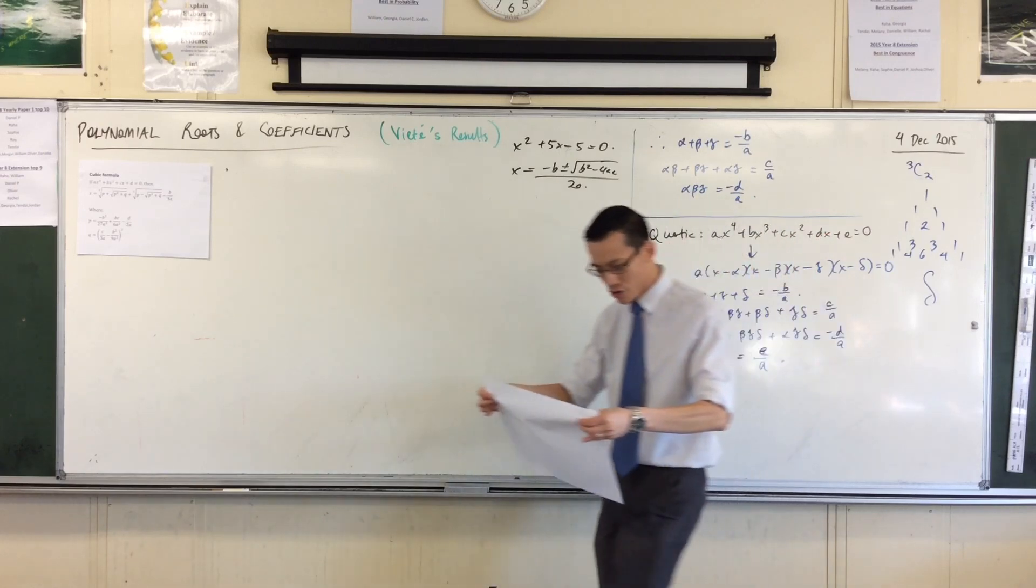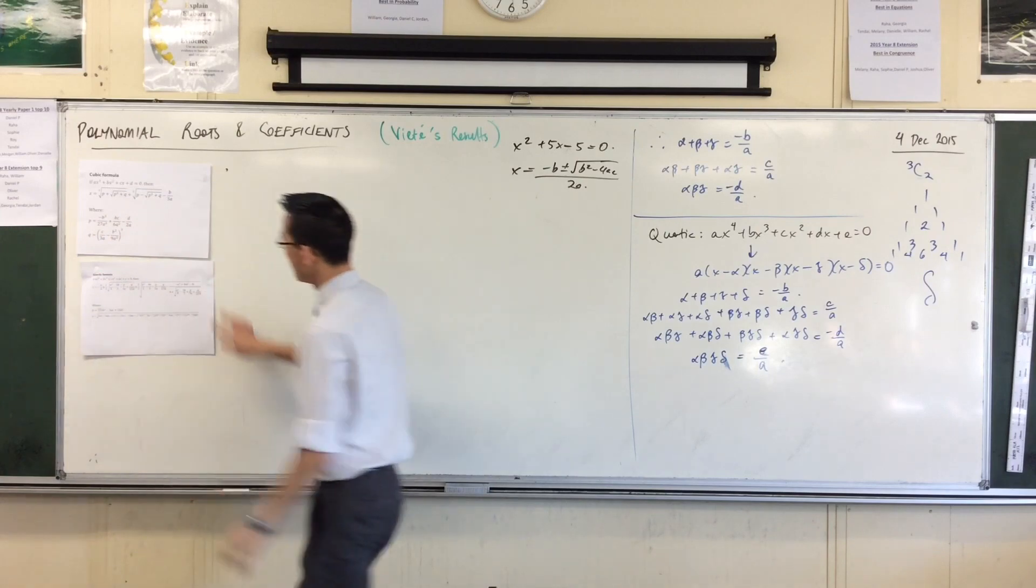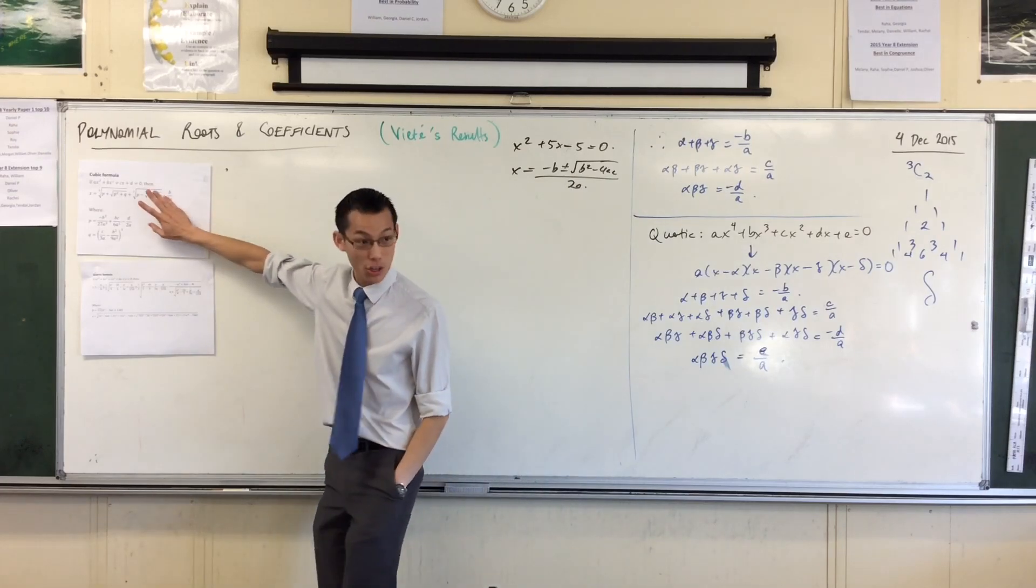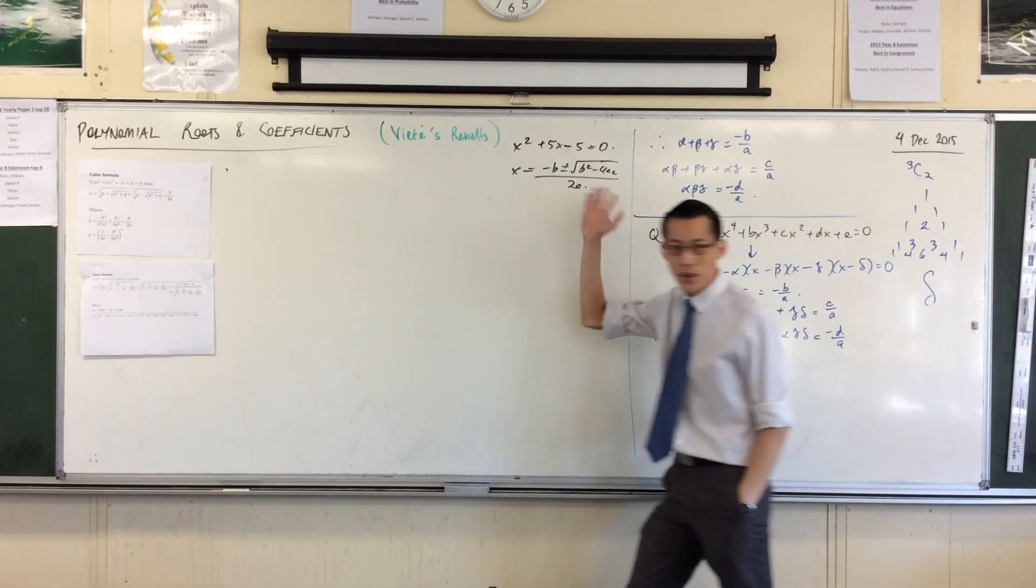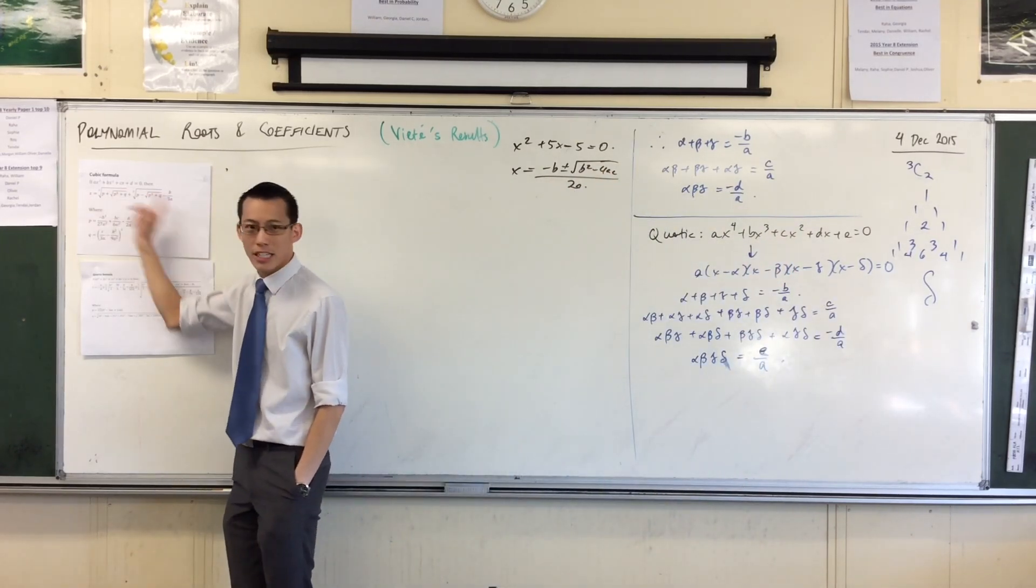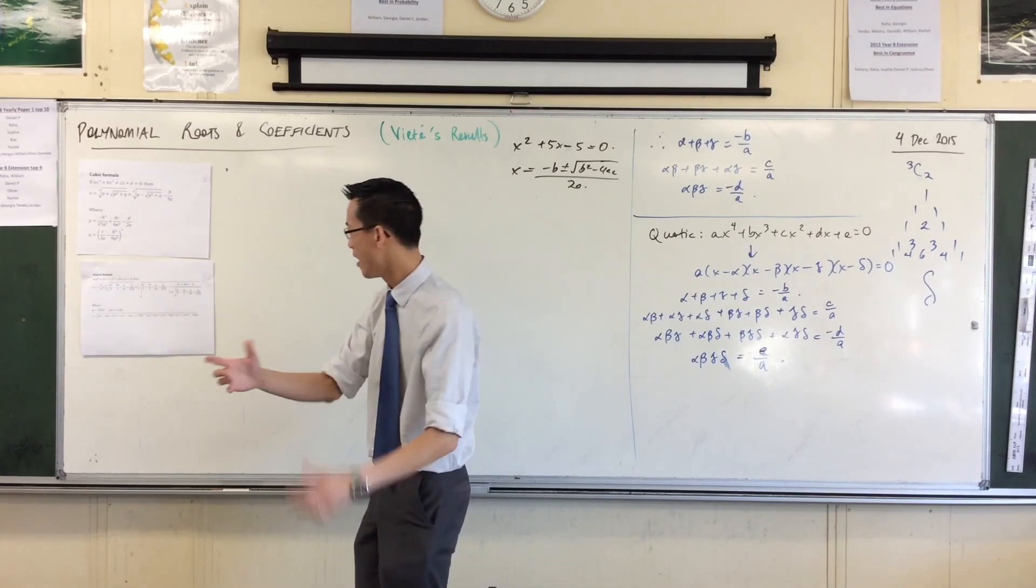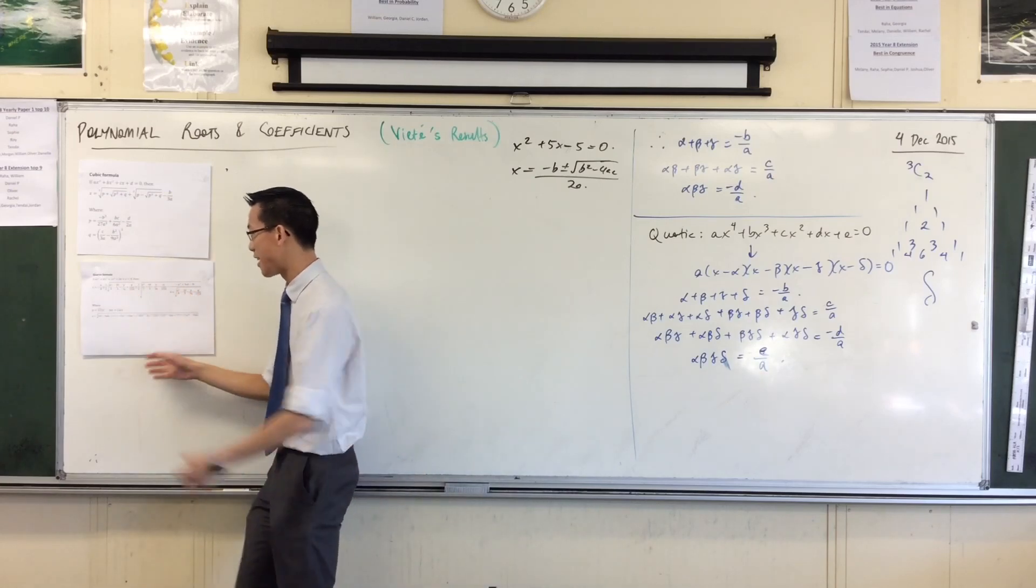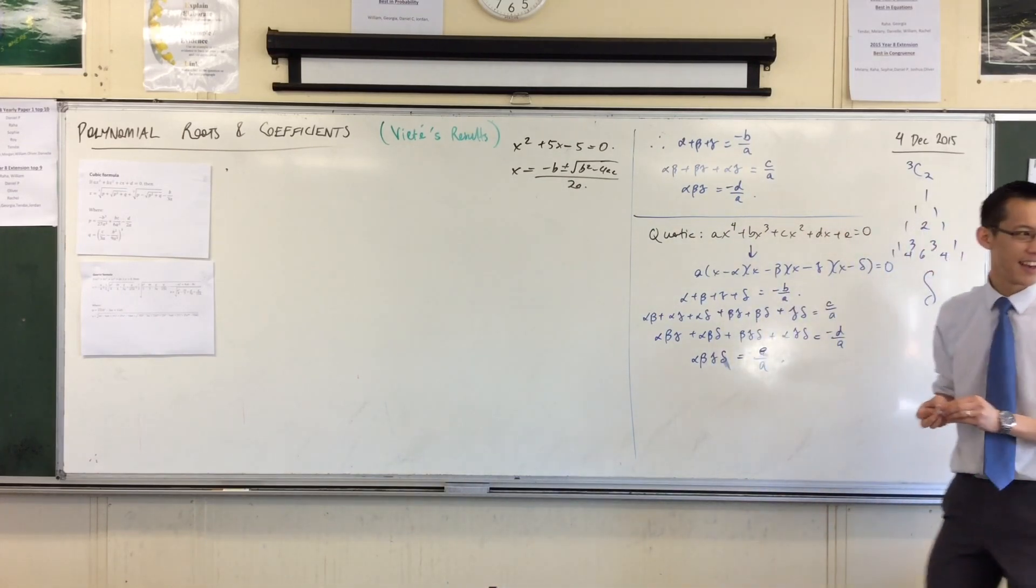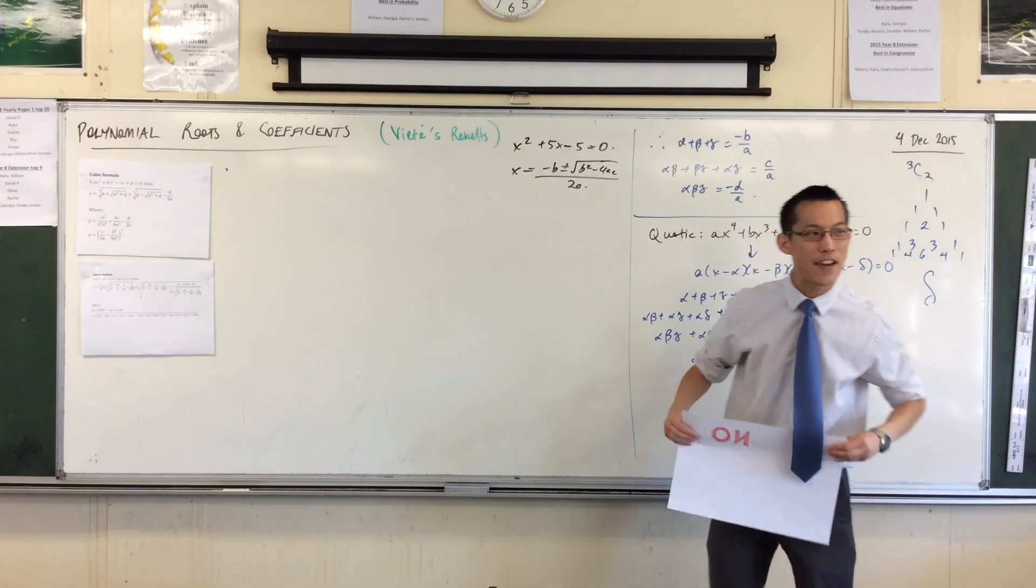The building blocks are just a, b, and c. When you move up to the cubic, the building blocks become things that themselves are the size of the quadratic formula. When you go to the quartic, the building blocks are things that are the size of the cubic formula. Now here's my favorite one, because after three and then four comes five. This is my favorite, by the way.